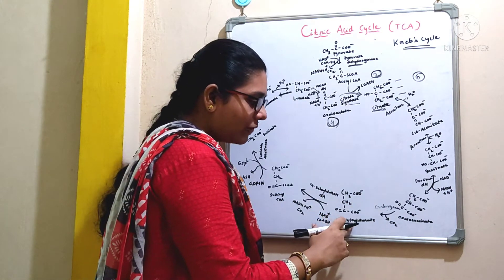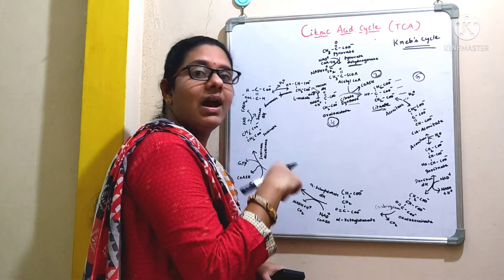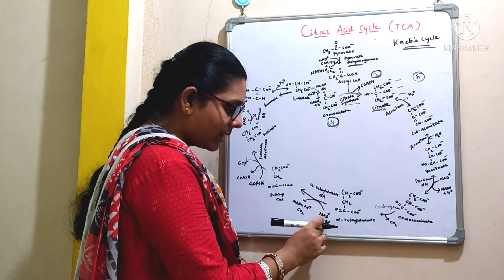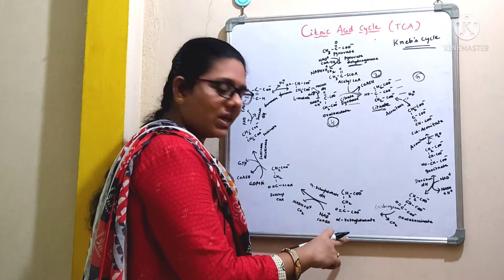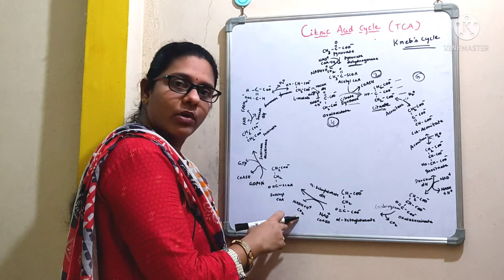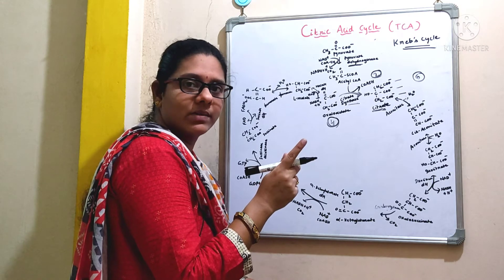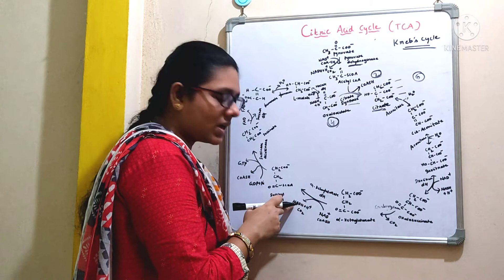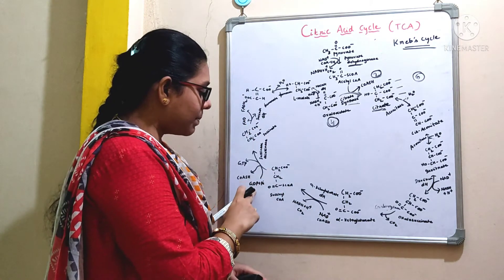This so-formed alpha-ketoglutarate will undergo simultaneous decarboxylation and dehydrogenation. It will combine with coenzyme A, giving rise to succinyl-CoA. There will be a removal of carbon dioxide and a removal of two hydrogen atoms, and those two hydrogen atoms are accepted by NAD+, giving rise to NADH + H+.